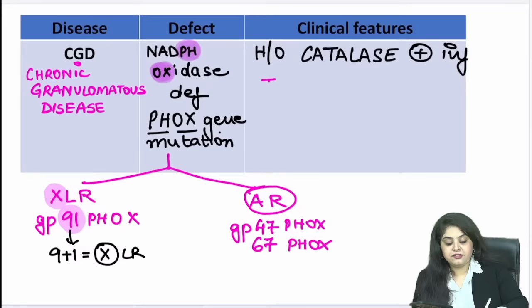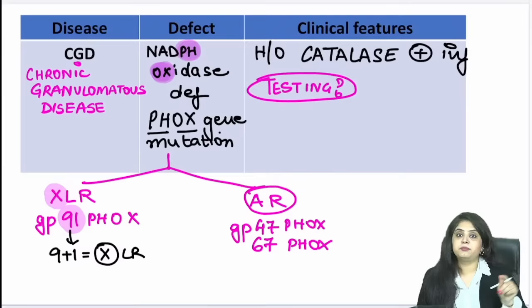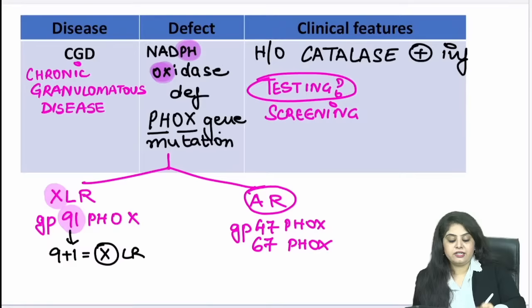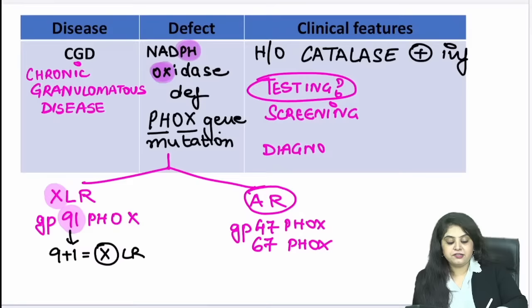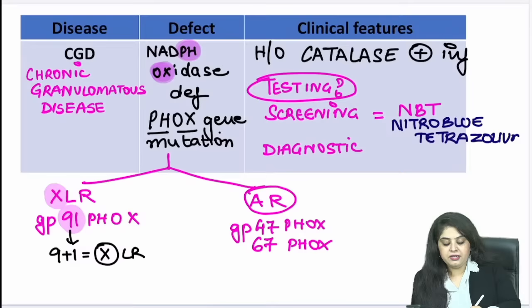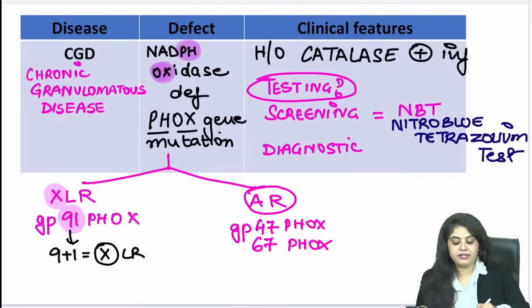The next question that comes in papers is: how do you test for CGD? There are two tests. The small one is the screening test: NBT — Nitro Blue Tetrazolium. As soon as the examiner writes NBT, you know it is about CGD. A student's mnemonic: NBT = 'Nibba-Nibbi test' (small teenage couples on social media) — so NBT is the small/screening test.